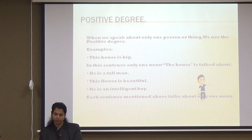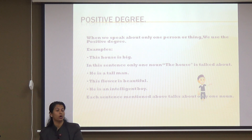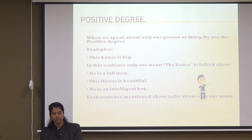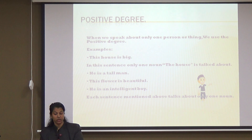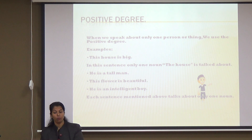The positive degree. When we speak about one person or one thing, we use the positive degree. Let's see the example. This house is big. In this sentence, only one noun — the house — is talked about. He is a tall man. This flower is beautiful. He is an intelligent boy. In each of these sentences, we are talking about only one noun — that is, a man, a flower, and a boy.